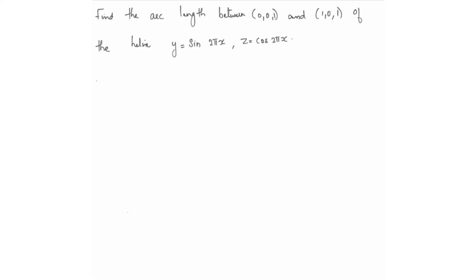Next problem: Find the arc length between the points (0,0,1) and (1,0,1) of the helix where y = sin(2πx) and z = cos(2πx). We will set up the arc length by applying r(t) and finding the parametric representation.